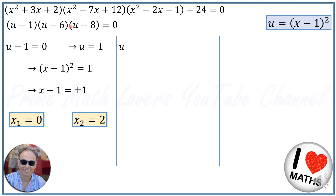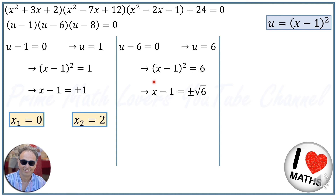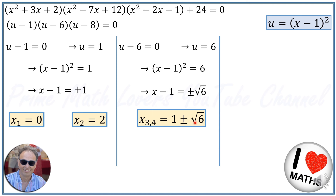Case 2: u-6=0, so u=6. This means (x-1)²=6. Taking the square root of both sides: x-1 = ±√6. Therefore x₃ and x₄ are equal to 1 ± √6.